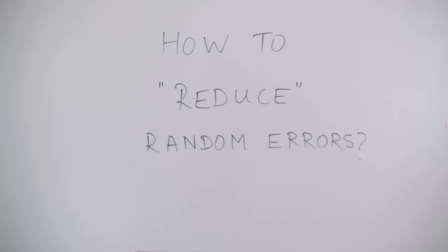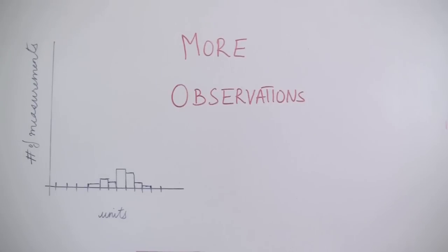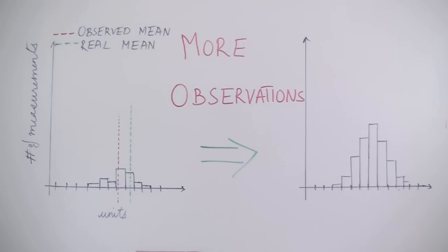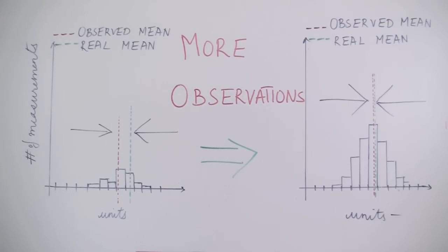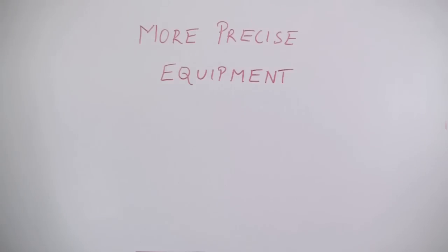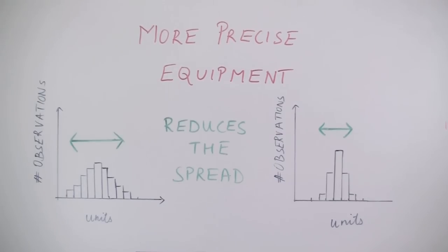Now the question arises, how can we minimize the effect of these errors? We can reduce random error by taking more number of measurements. This has the effect of averaging out random errors. We can also reduce random error by using more precise equipment.